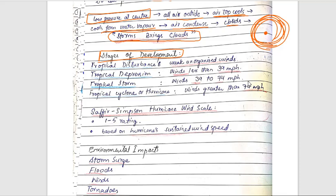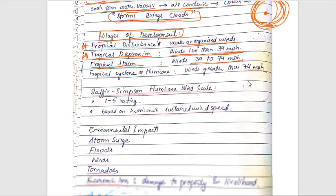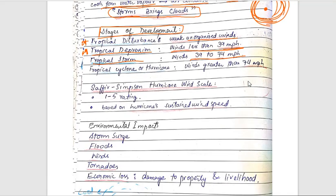Next come the stages: tropical disturbance with weak, unorganized winds; depression with winds less than 39 mph; tropical cyclone with giant winds.